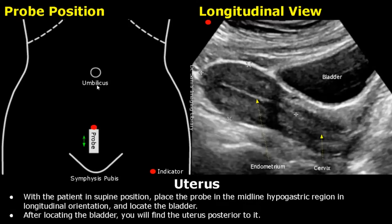For scanning the uterus, we place the probe between the umbilicus and the symphysis pubis joint. This is the hypogastric region, also called the suprapubic region. Place the probe in the midline in longitudinal orientation.